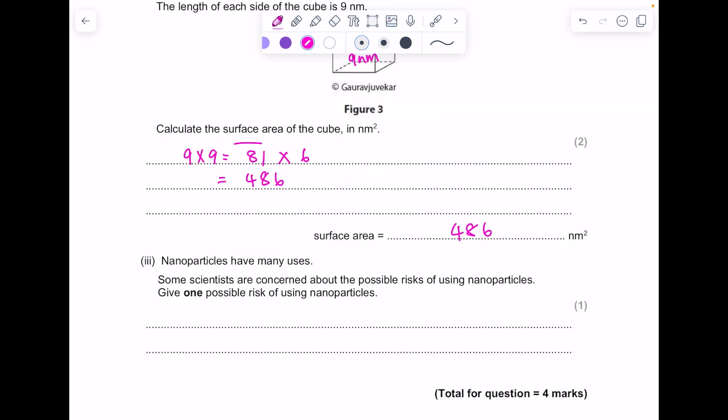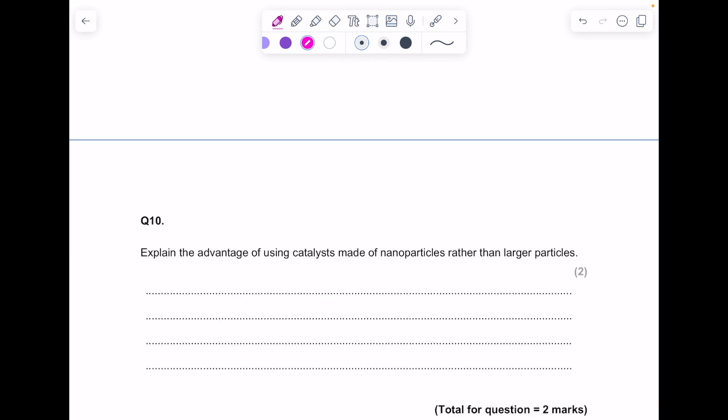Again, some scientists are concerned about the possible risks. Give one possible risk: may enter cells, it's the same answer again, and catalyze harmful reactions. Explain the advantage of using catalyst made of nanoparticles rather than larger particles. Well, remember these catalyst particles have a much larger surface area, and therefore they increase the rate of reaction. Much larger surface area to volume ratio, so they can increase the rate of reaction.